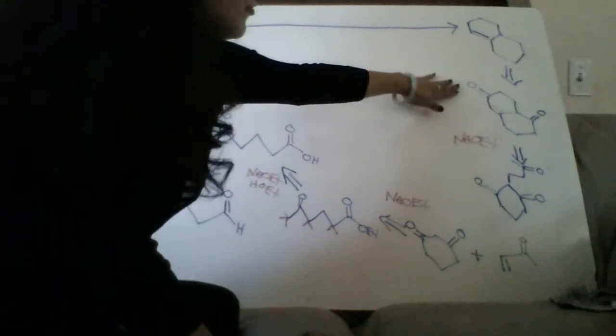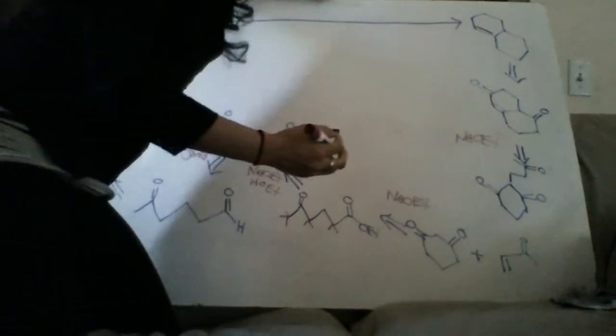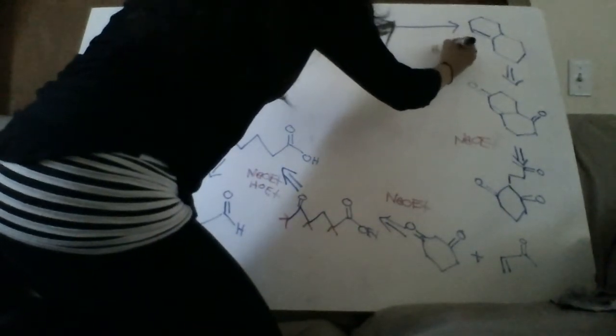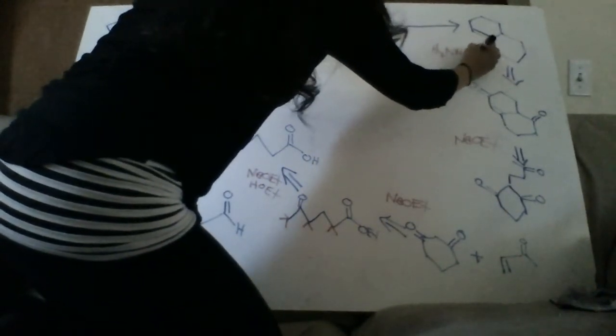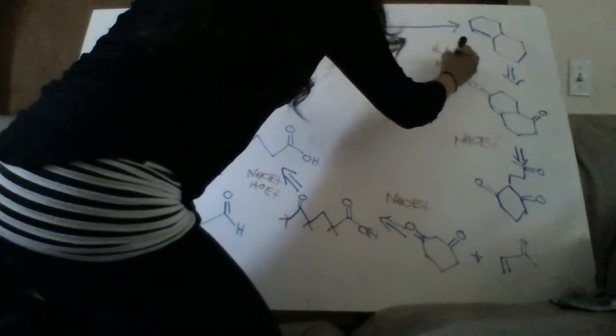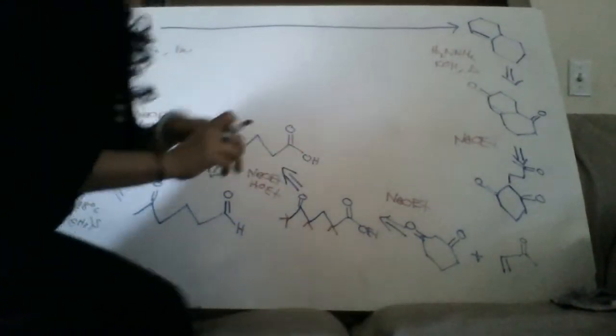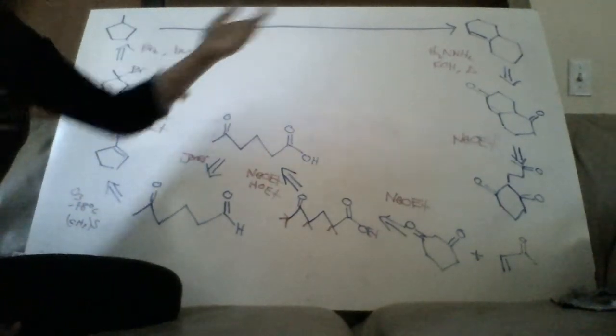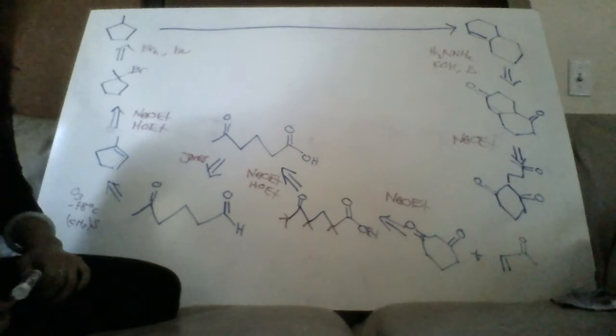And then lastly to remove these carbonyls we have several choices but let's go ahead and use a Wolff-Kishner reduction with heat. And that's how we take a cyclopentane and turn it into two six-membered rings.